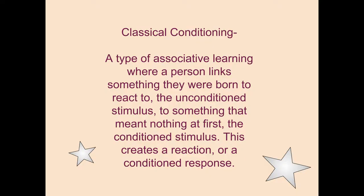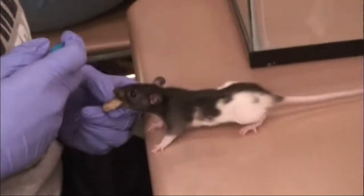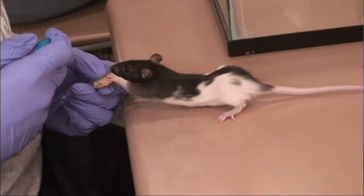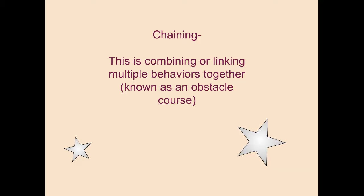Classical conditioning is a type of associative learning where a person links something they were born to react to — the unconditioned stimulus — to something that creates a reaction, or a conditioned response. For example, Piper is conditioned to react to the clicker, which is associated with food.